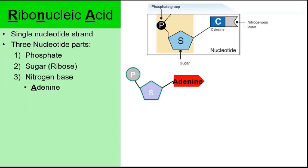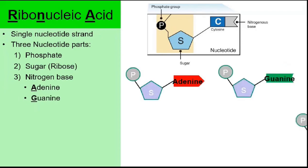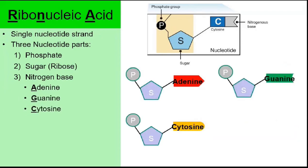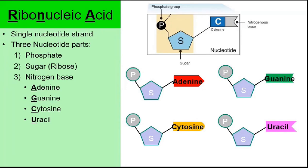So let's talk about ribonucleic acid. When you look at the picture, RNA on the right, you can see it's only a single strand of nucleotides. But the picture of DNA on the left, DNA is a double helix because it's made from two strands of nucleotides.